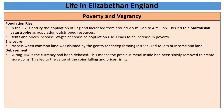Thirdly, there is debasement. Henry VIII during the 1540s had debased the currency — removing precious metal from inside the coinage to create more coins. This seemed like a good idea at the time, but it led to inflation because the value of the coin fell and therefore prices rose. Because we already know wages were falling at the same time, this increase in prices also led to poverty.